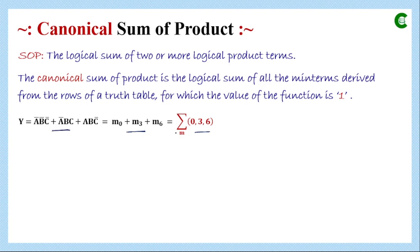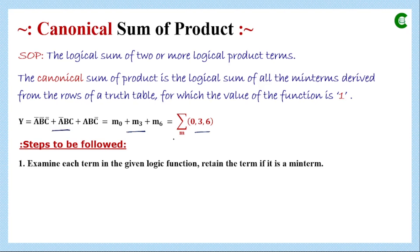Today, if a logical function is given in non-canonical form, we will transform it to its equivalent canonical form. For doing that we need to follow some steps. The first step says: examine each term in the given logic function and retain the term if it is a minterm.